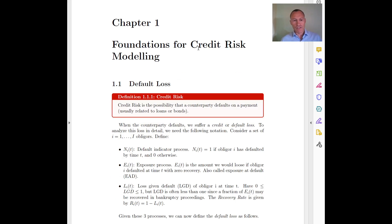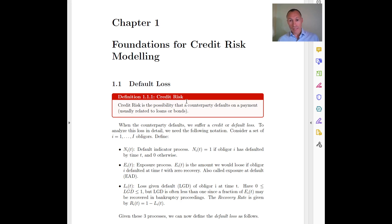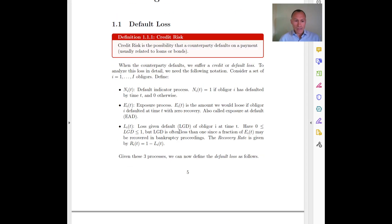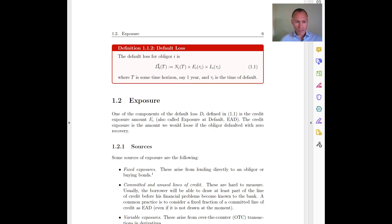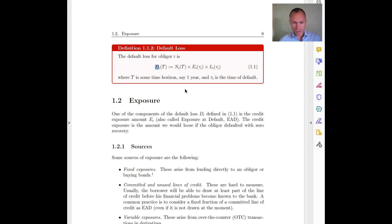Let's start from the very beginning: what is credit risk? Credit risk is the possibility that the counterparty defaults on a payment, and we are typically thinking about securities like bonds or bank loans. The credit loss is a variable we call D here, and it is useful to decompose that loss into three terms.